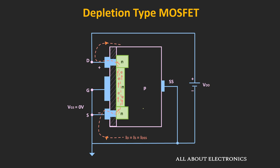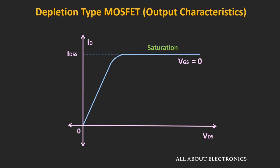If we keep on increasing the voltage between the drain and the source terminal, the current flowing through the channel will increase. This process continues until all the electrons in the channel contribute to the flow of current. After that, if we increase the voltage further, the current becomes constant. The conventional current flows from the drain terminal towards the source terminal. For Vgs equal to 0, as we increase Vds, the drain current ID increases and then becomes constant. The value of this saturation current for Vgs equal to 0 is known as IDSS.